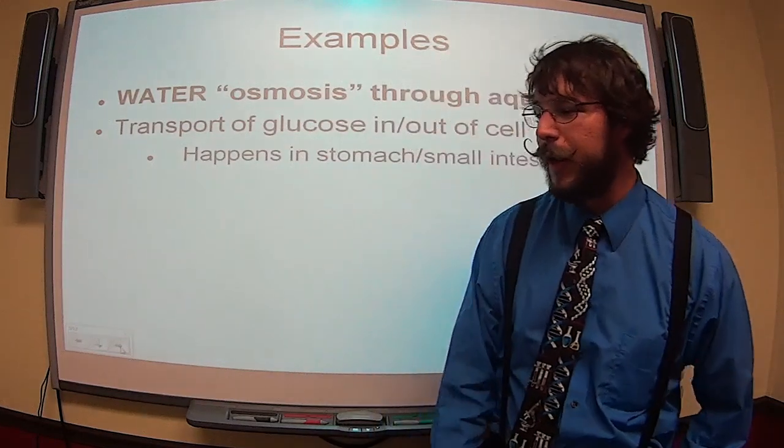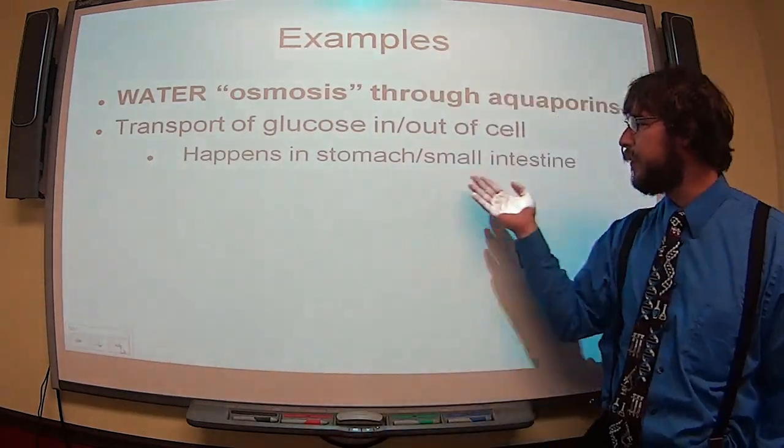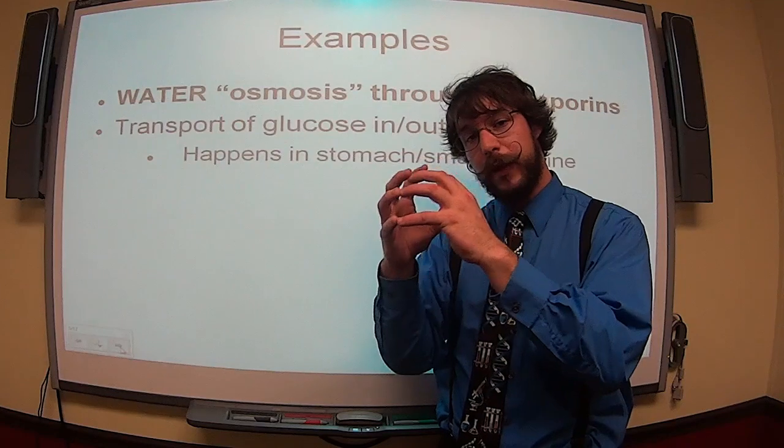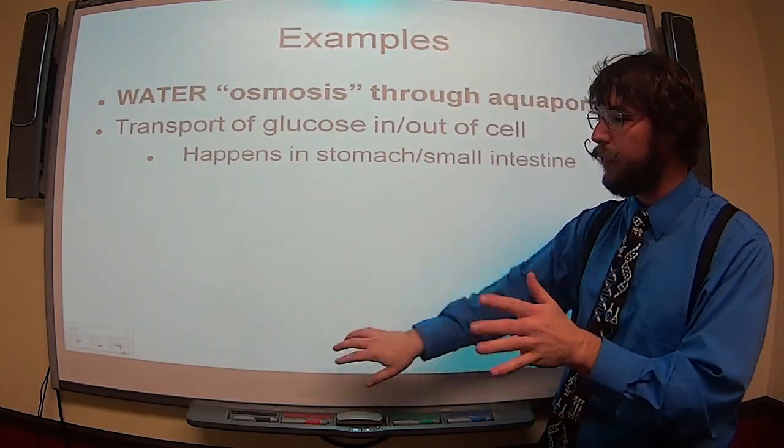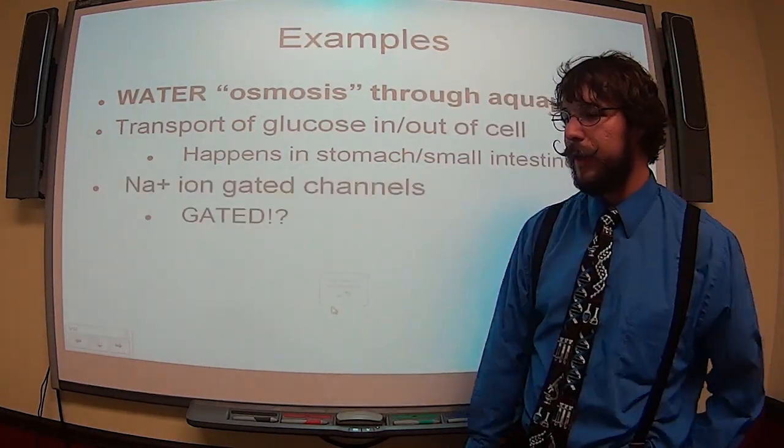Glucose, when it's transported inside and out of the cell, happens in the stomach, small intestine. Glucose, that big ring, it's also polar. It cannot move through the cell membrane, so it needs that.